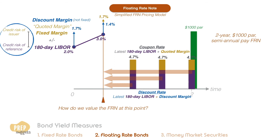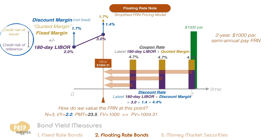We shall therefore use a rate of 4.4% to discount the future cash flows. To calculate the value of the FRN, we have three periods to maturity and an interest per period of 2.2% — this is half the discount rate of 4.4%. Payment per period is $23.50. Remember to halve the coupon rate, with FV of $1,000. Solving for PV, we get a value of $1,004.31.